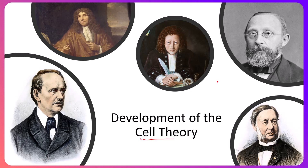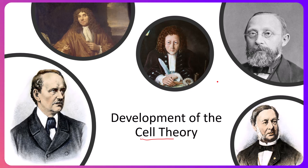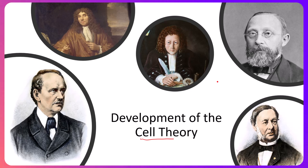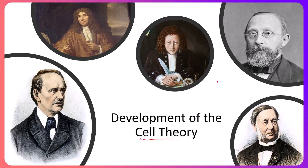Robert Hooke is credited with naming the cell. He was looking at cork cells through a primitive microscope — basically a series of lenses using candlelight, since this was the late 1600s, prior to the light bulb. Cork comes from a plant, so he was looking at plant cells, which are rather boxy. The reason he named it a 'cell' was because it reminded him of the cells — or rooms — that monks in monasteries lived in. That's where the name came from.